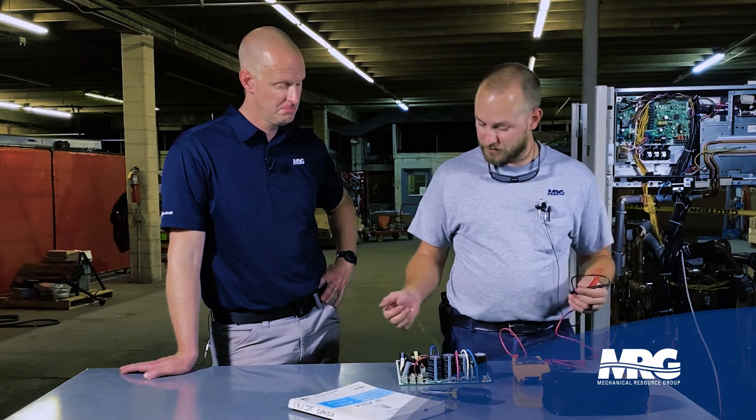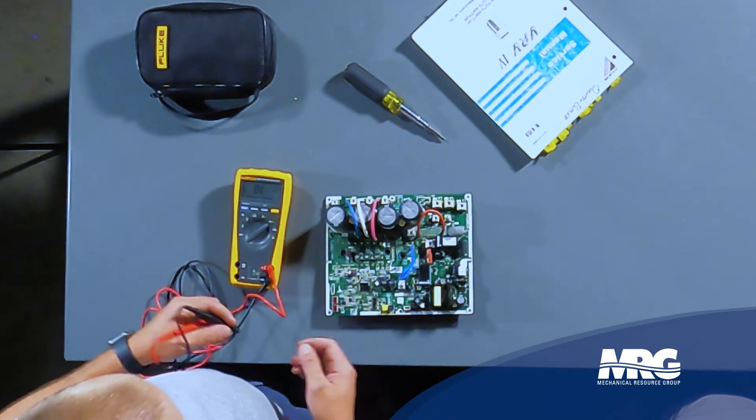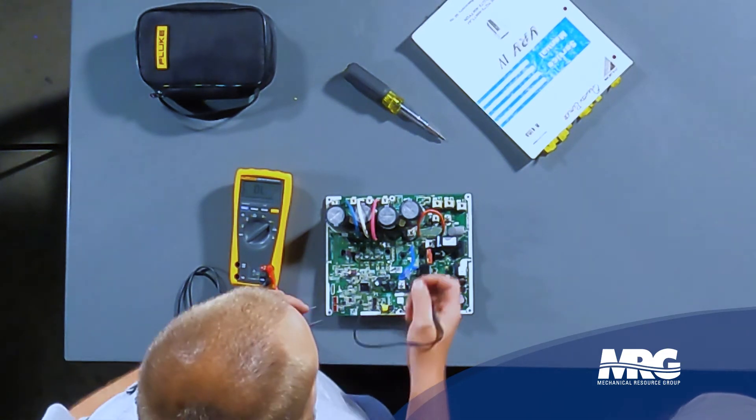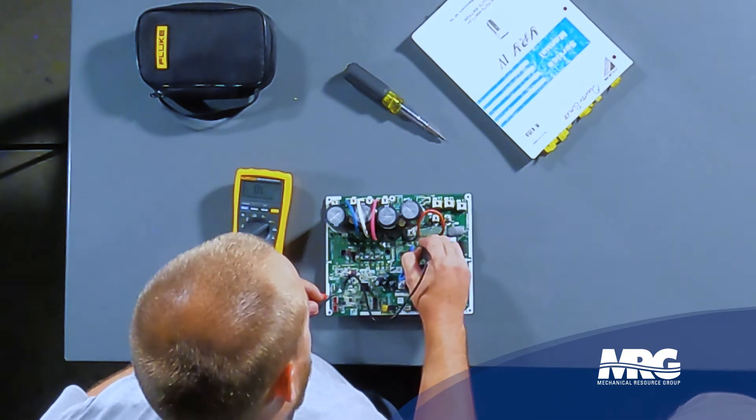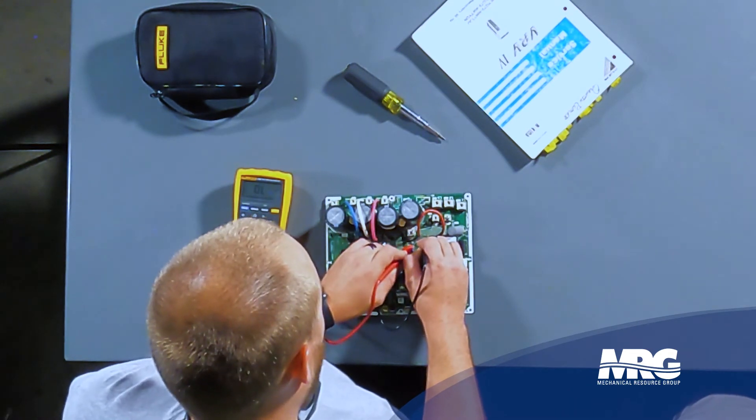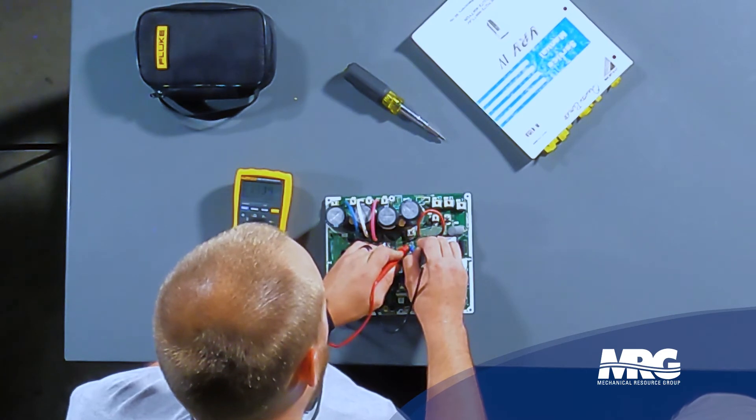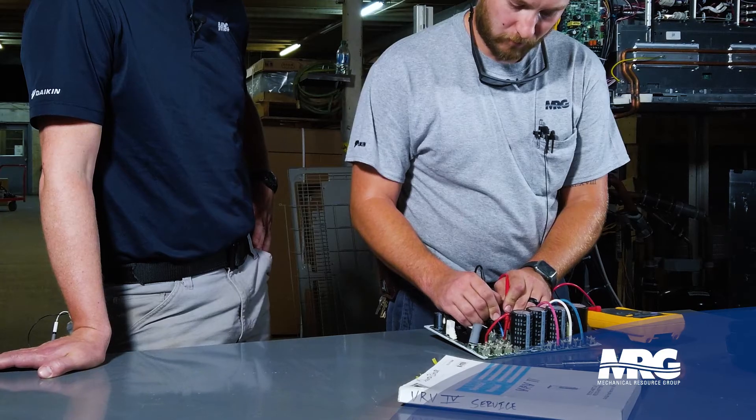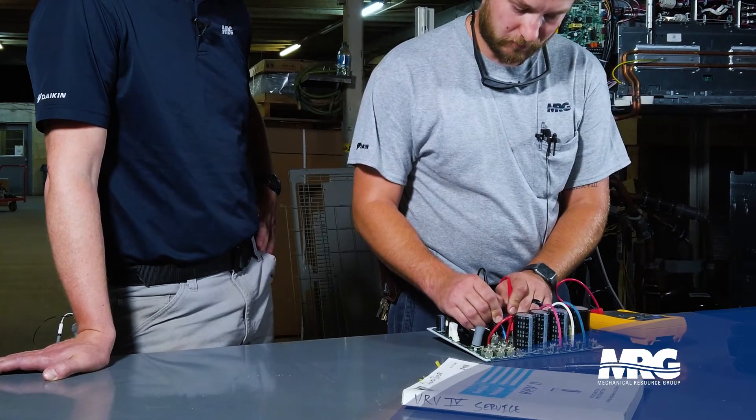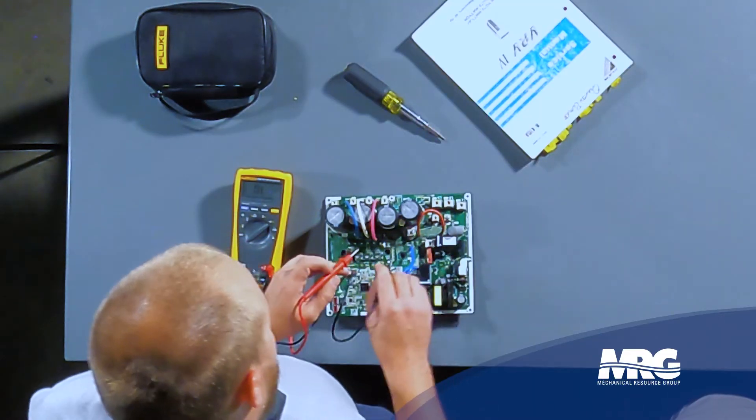So now we're going to take our black meter lead, we're going to go to the positive terminal, red meter lead to the first terminal, we have 0.48, looks good. I'm going to go to the next terminal, 0.48, and our last terminal, 0.48.